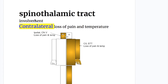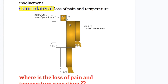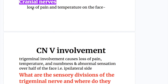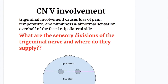The spinothalamic tract involvement causes contralateral loss of pain and temperature on the body surface, shown here in brown color. Regarding cranial nerve involvement: involvement of cranial nerve five (trigeminal) causes loss of pain and temperature, numbness, and abnormal sensation over half of the face on the ipsilateral side.